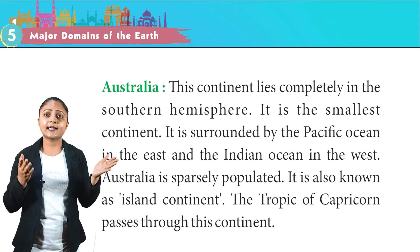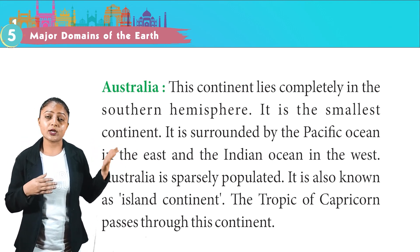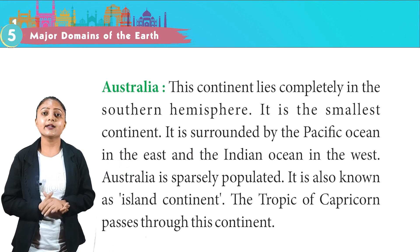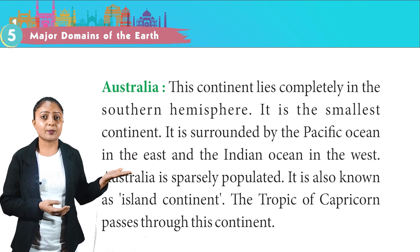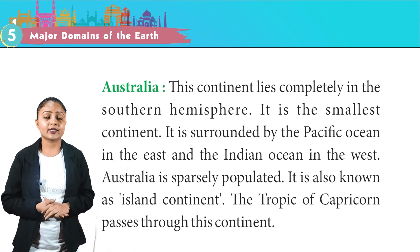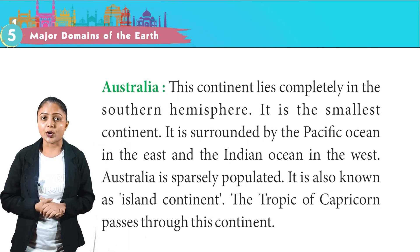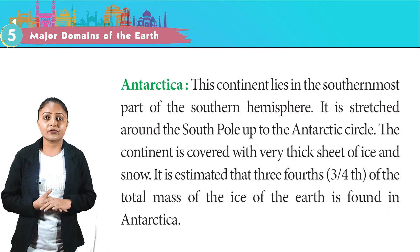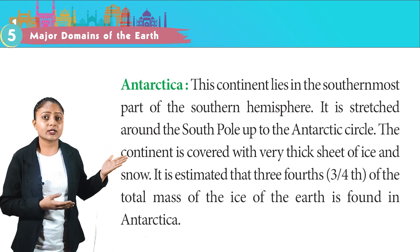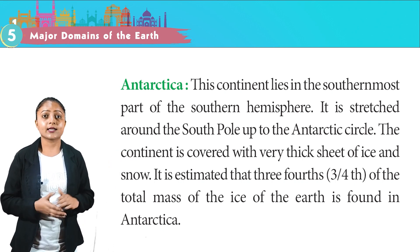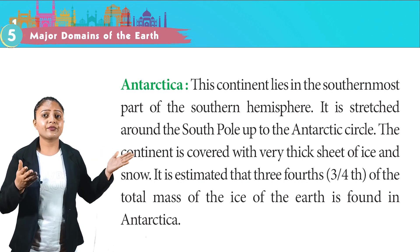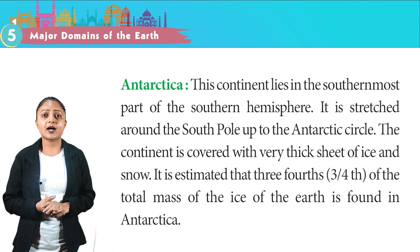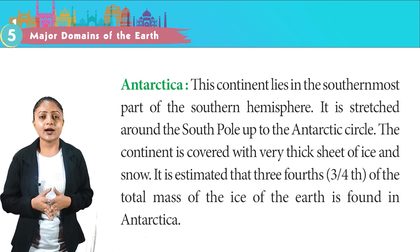Australia is the smallest continent and lies completely in the southern hemisphere. It is surrounded by the Pacific Ocean in the east and the Indian Ocean in the west. Australia is sparsely populated and is also known as the island continent. The Tropic of Capricorn passes through this continent. Antarctica lies in the southernmost part of the southern hemisphere, stretched around the south pole up to the Antarctic Circle. The continent is covered with very thick sheets of ice and snow, and it is estimated that three-fourths of the total mass of ice on earth is found in Antarctica.